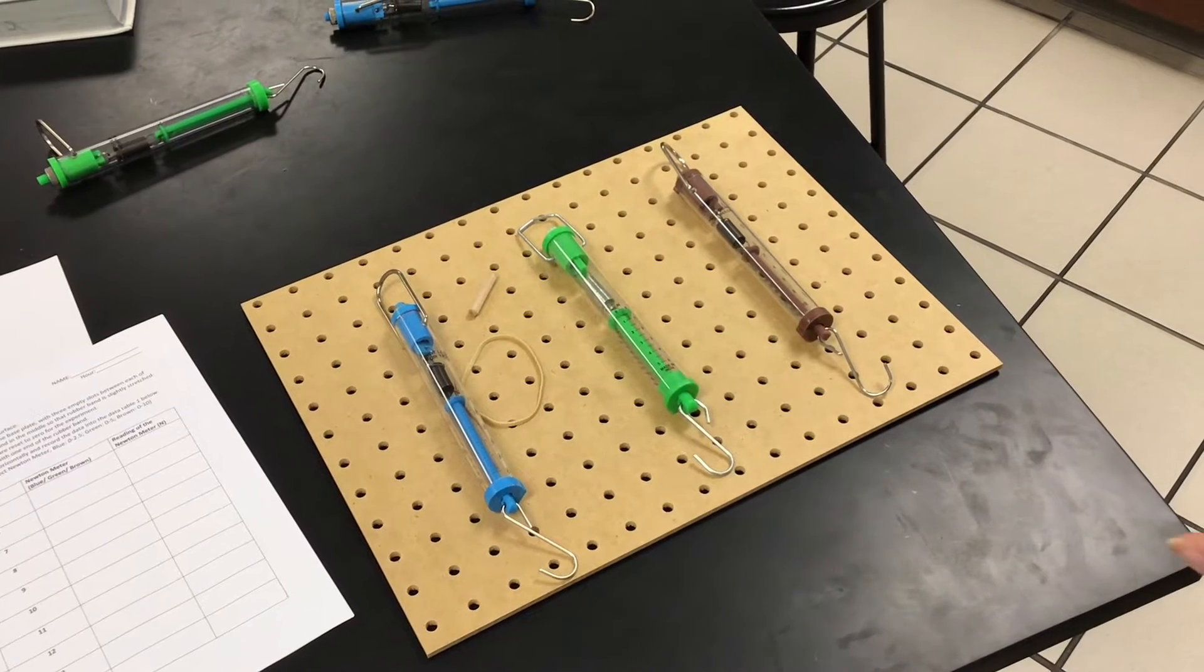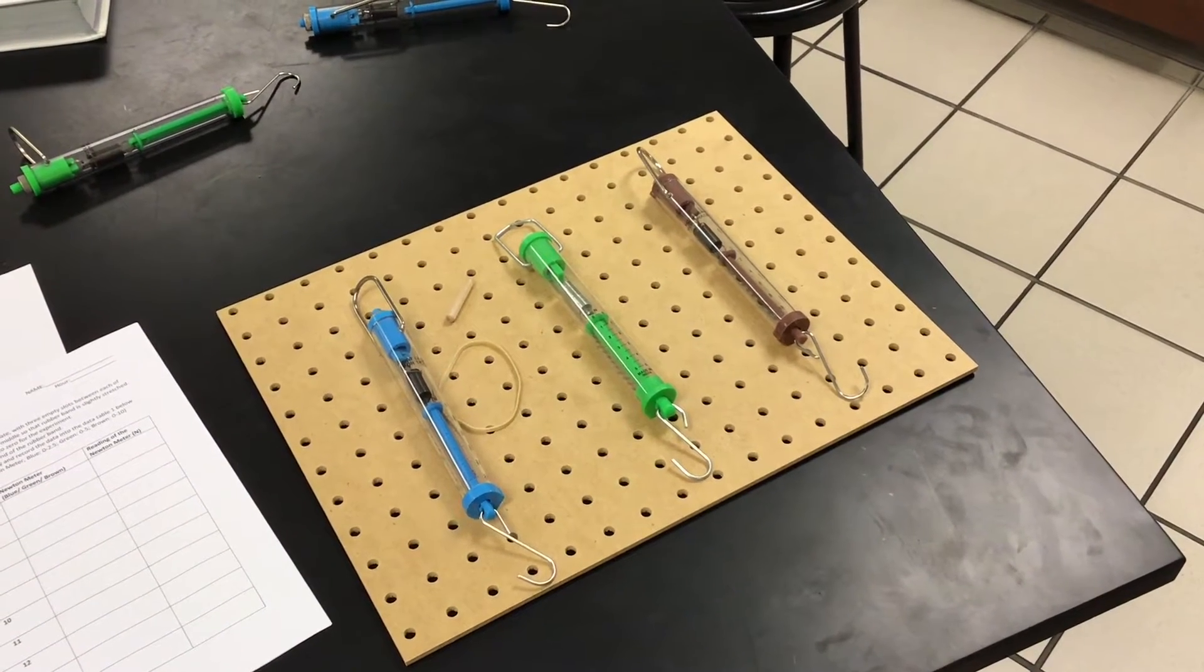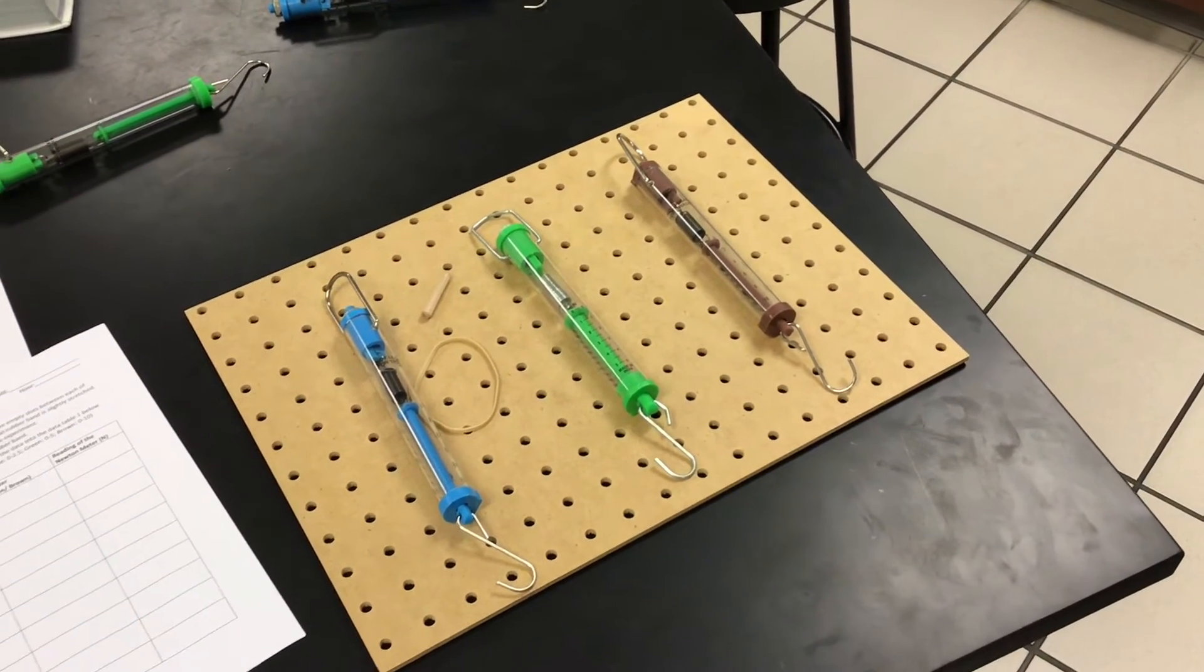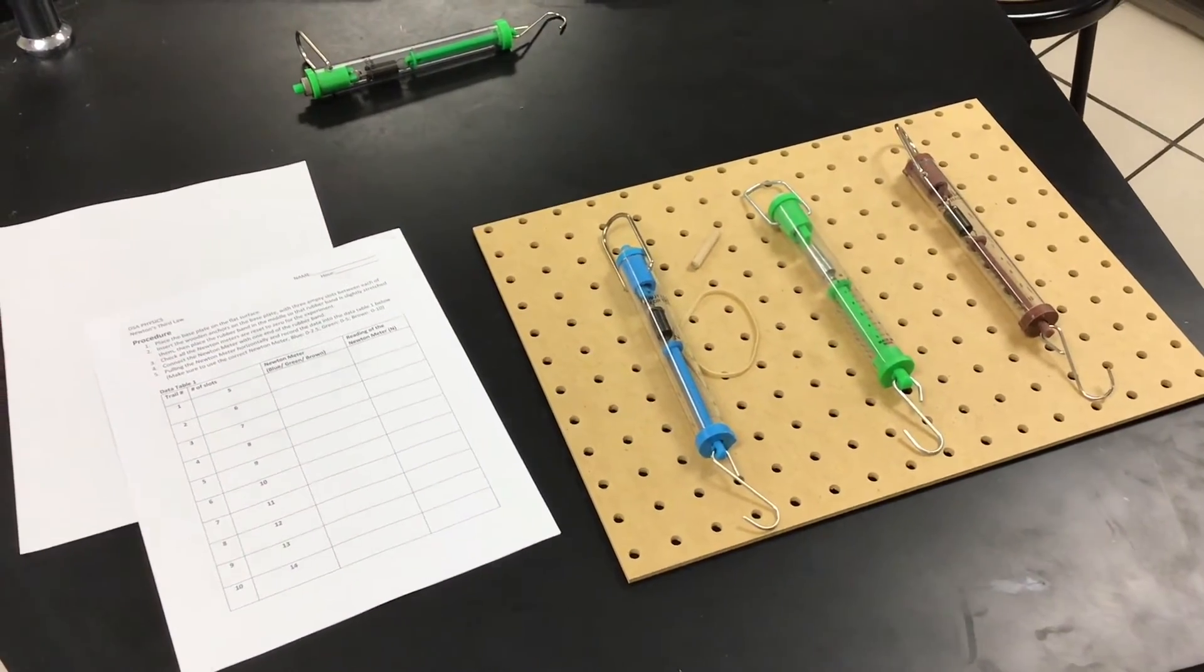The color does matter because blue is from 0 to 2.5 Newtons, green is from 0 to 5, and the brown one is from 0 to 10 Newtons. Now I'm going to do a demonstration of how this lab is going to work.